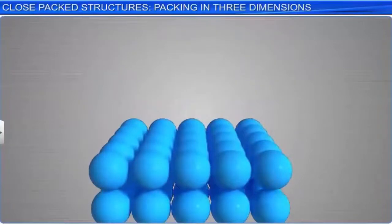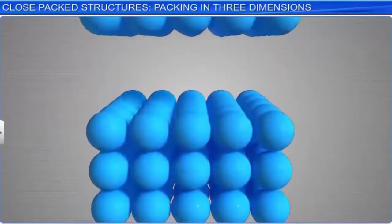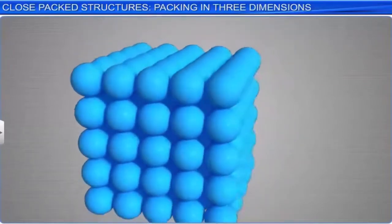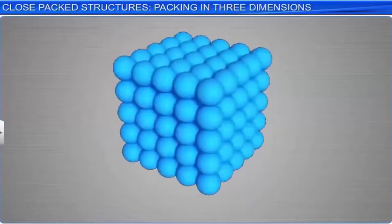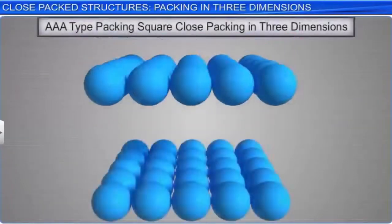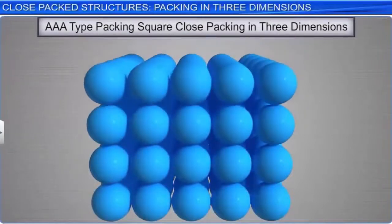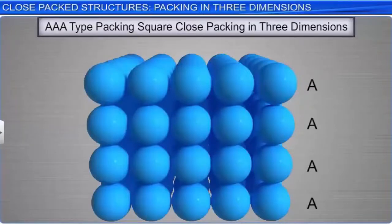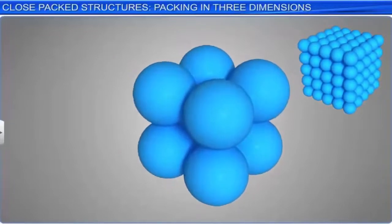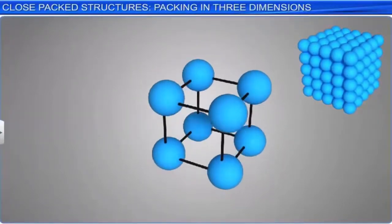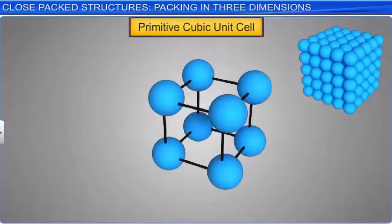Let's first study three-dimensional close packing from two-dimensional square close packing. When placed in layers where subsequent layers are also of type A, this three-dimensional arrangement is referred to as AAA type packing. This arrangement results in the formation of a simple cubic lattice, and the unit cell is a primitive cubic unit cell.